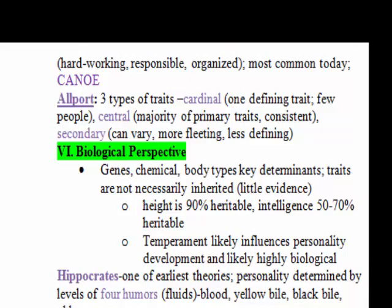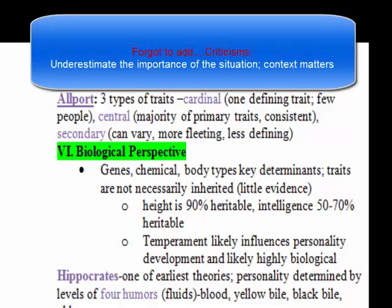Another theorist is Allport, who said there are three types of traits: cardinal, central, and secondary. Cardinal traits are one pervasive, defining trait, and very few people have them — for example, Martin Luther King Jr. and the trait of social justice. Central traits are the majority of our primary traits and are relatively consistent — things like honesty, extroversion, and trustworthiness. Secondary traits are a bit more varied, like taste in music — not as consistent, can change over time, but still seen as part of your personality.